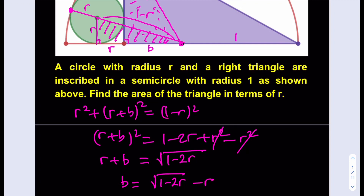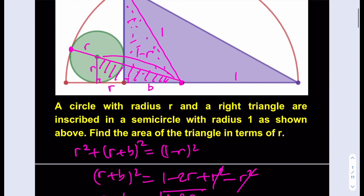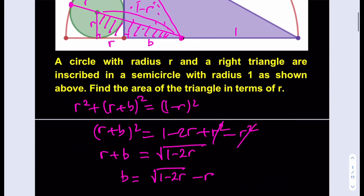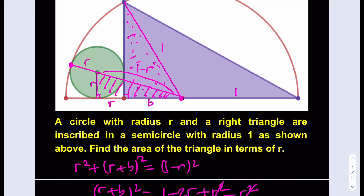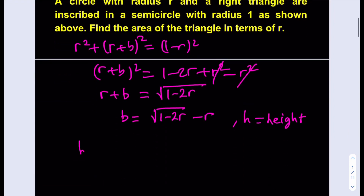So b is the base of the triangle — but what I need is not the whole thing, but part of it. In this case it will be b plus 1, so we're going to consider that. Then h is the height of the triangle. The hypotenuse of the dotted right triangle is 1, the height is h, and the base is 1. Writing the Pythagorean theorem: b squared plus h squared equals 1. Solving for height, h equals the square root of 1 minus b squared.